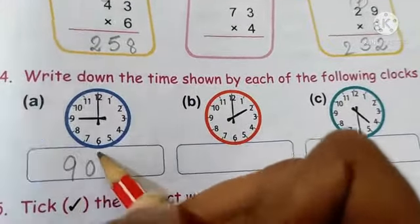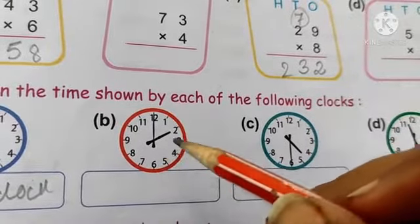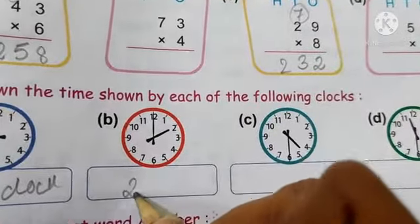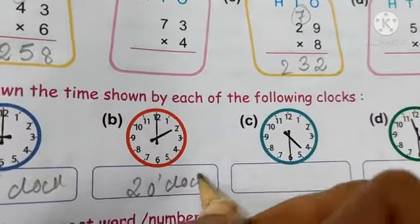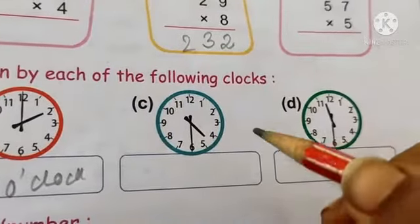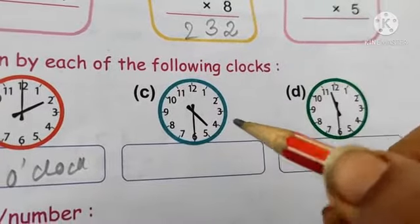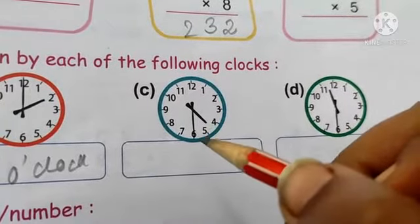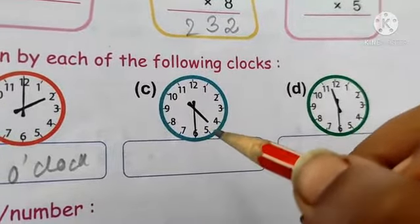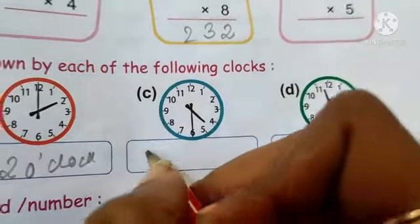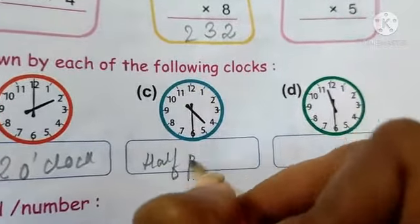Next clock: the minute hand is at twelve and the hour hand is on two — it's two o'clock. Next: the minute hand is on six and the hour hand is between four and five — so it's half past four.